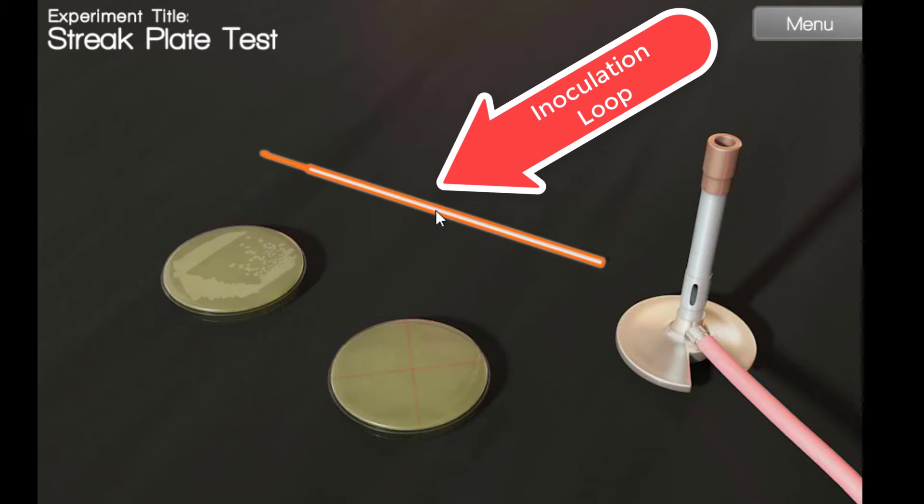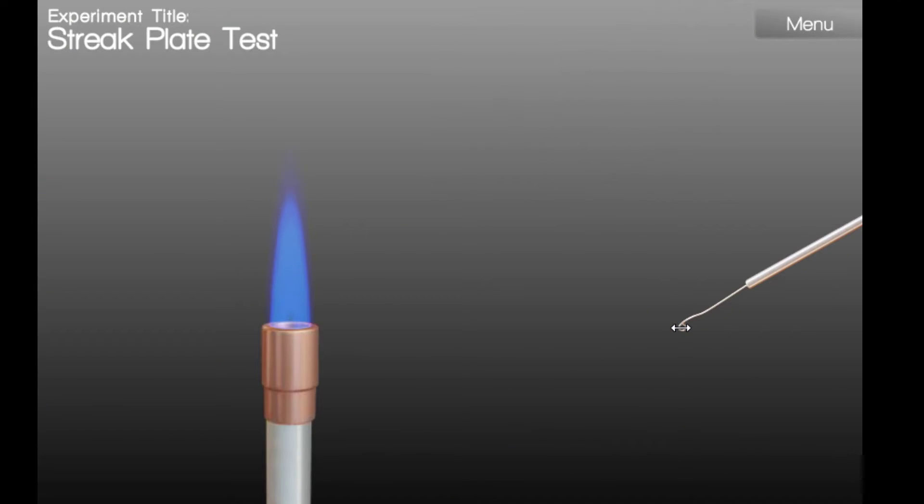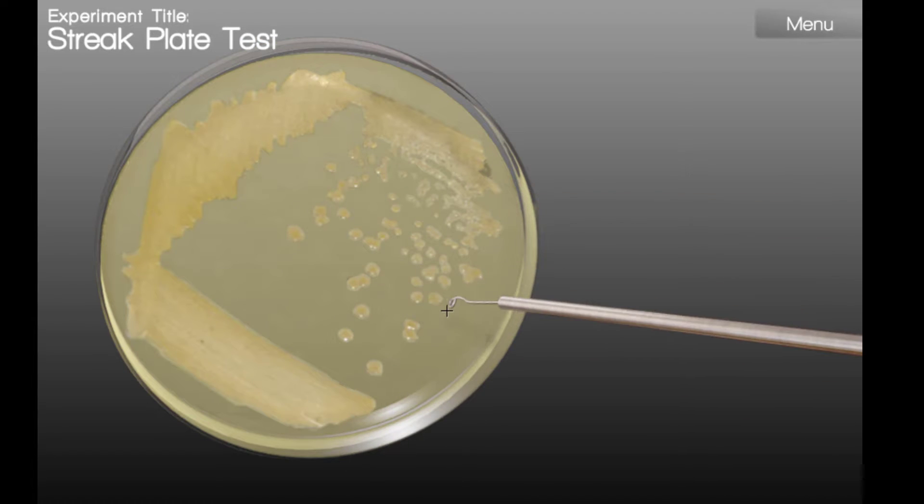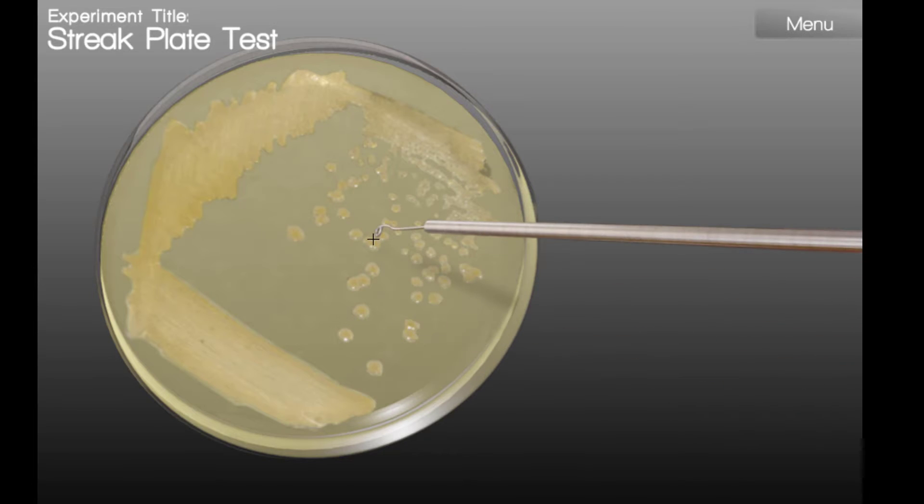This is our inoculation loop. First, we flame our loop. When you flame the loop, you want to make sure to pass it over the flame until the loop is glowing red. Now we can choose our colonies. We'll want to make sure to choose an isolated colony, one that looks nicely round, that's off by itself.